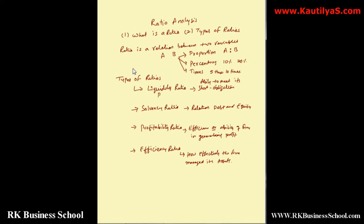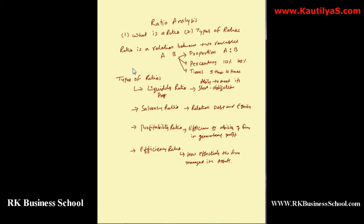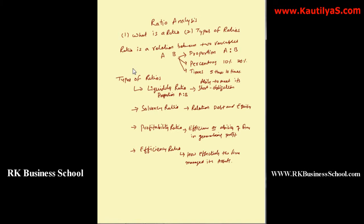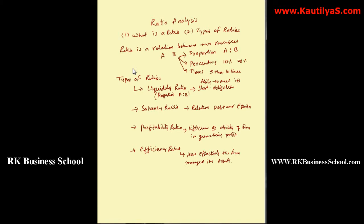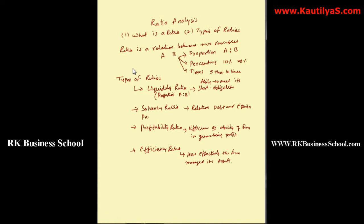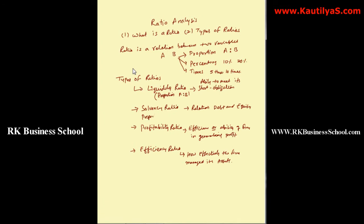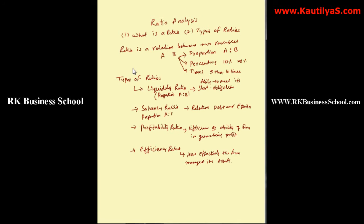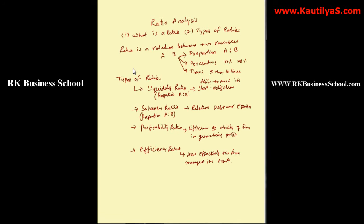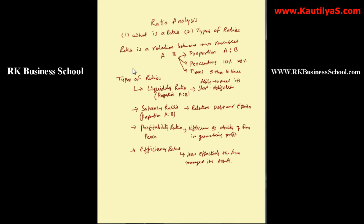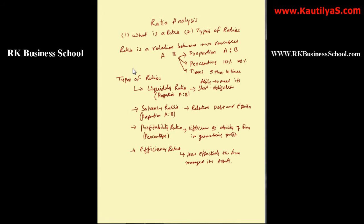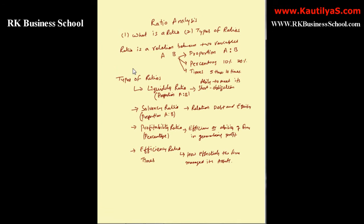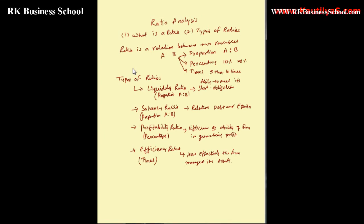Liquidity ratios are measured in terms of proportion, that is A is to B. Similarly, solvency ratios are also measured in terms of proportion, that is A is to B. Profitability ratios are measured in terms of percentage, whereas efficiency ratios are measured in times — that is, number of times.